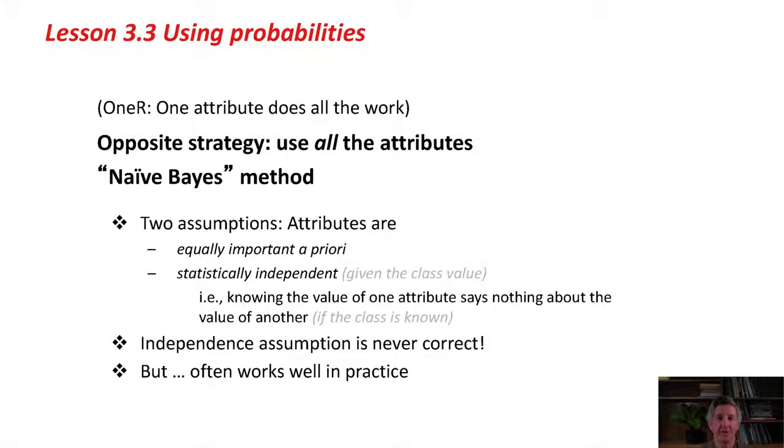Another simple strategy is the opposite, to assume that all of the attributes contribute equally and independently to the decision. This is called the Naive Bayes method. I'll explain the name later on.